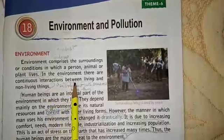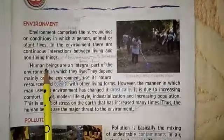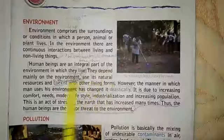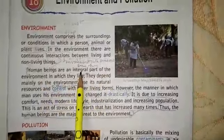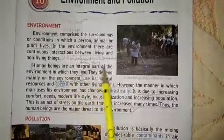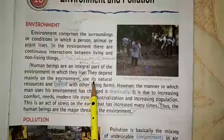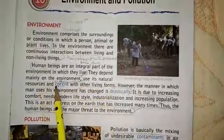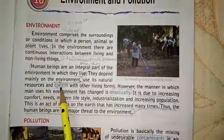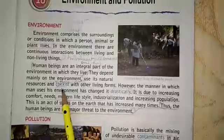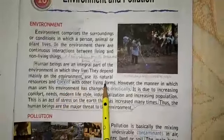The interaction is between the living and non-living things. Human beings are an integral part of the environment in which they live — they are part of it. They depend mainly on the environment, use its natural resources, and coexist. Coexist means existing at the same time alongside other living forms.